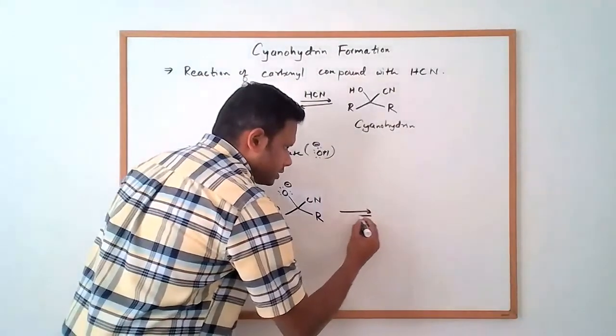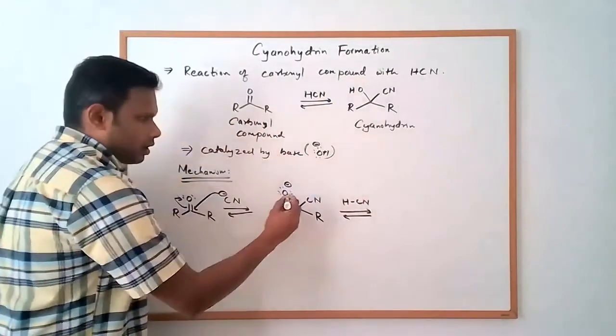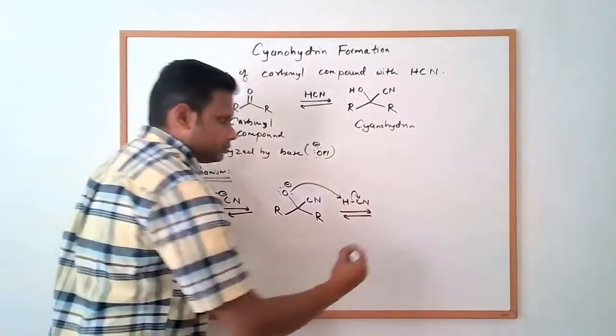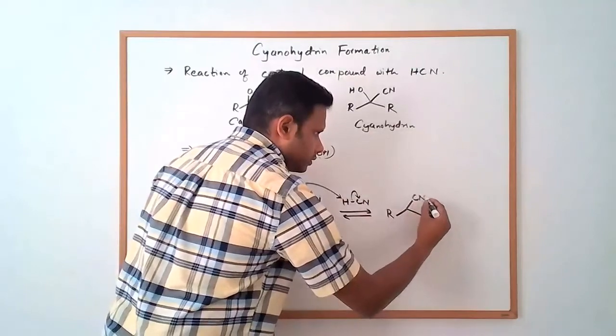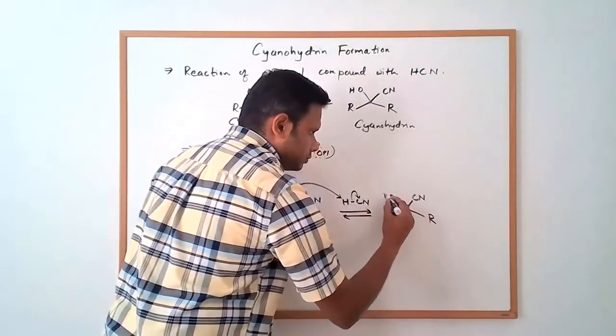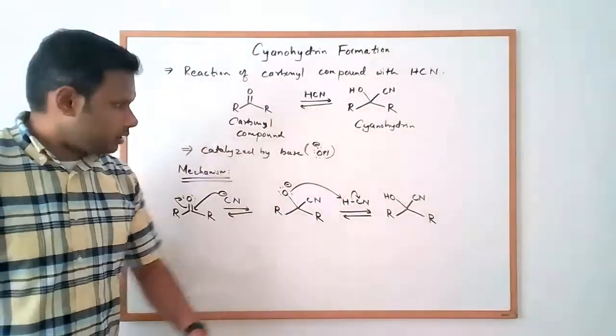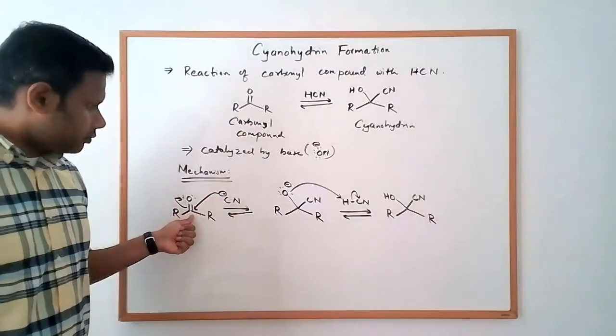And in a subsequent step, the oxygen here can deprotonate HCN to give us the cyanohydrin product. It would give us the cyanohydrin. So it's a two-step mechanism. The initial attack of the cyanide on the carbonyl carbon.